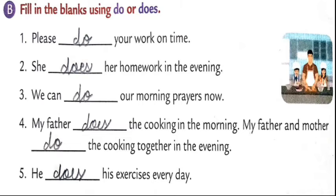Number two: she dash her homework in the evening. She is a singular pronoun — we are talking about one person, one girl — so we use does. The third one: we — we is a plural pronoun so we use do. Do the exercises and check the answers from the answer key attached in Google Classroom.